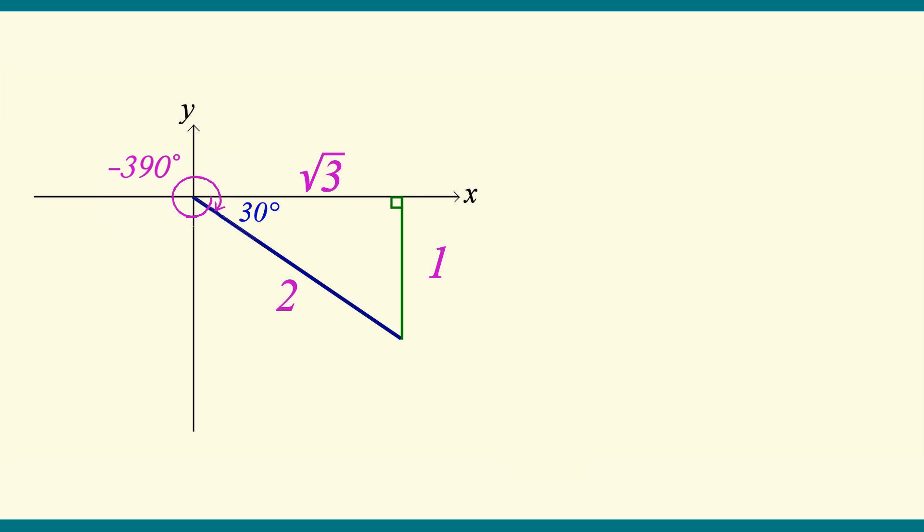The next step is important. We insert the signs of the coordinates. In this case, the x-coordinate is positive and the y-coordinate is negative. Now we're all set to find the trig values.